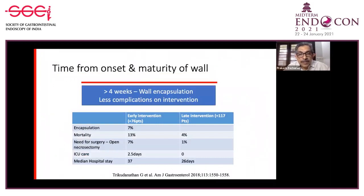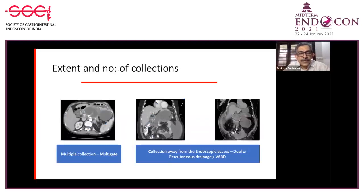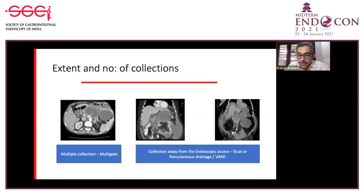Drainage before four weeks: encapsulation may happen in a small percentage but is associated with increased risk of mortality and surgery. Another factor dictating type of drainage is whether the patient has multiple collections—if so, a multi-gate approach would be required. If the collection is away from the endoscopic axis, dual or percutaneous drainage, or surgical minimally invasive drainage might be required.